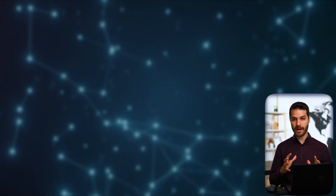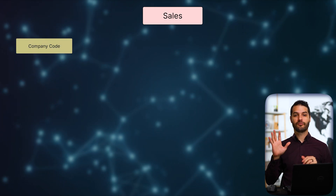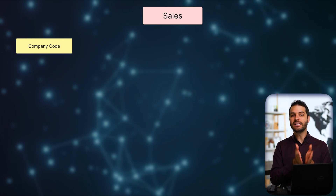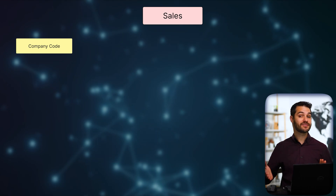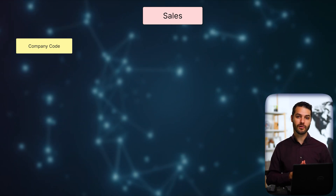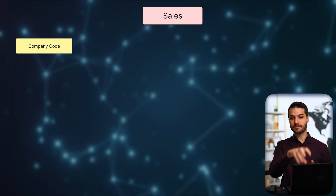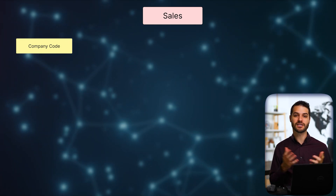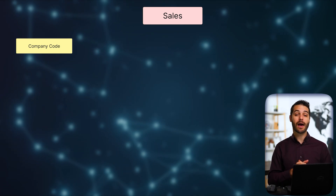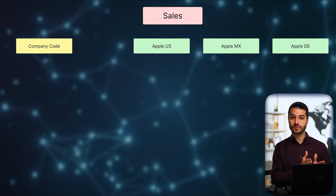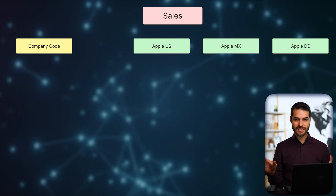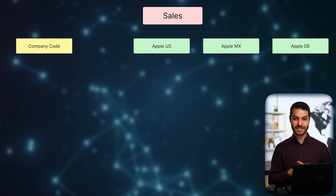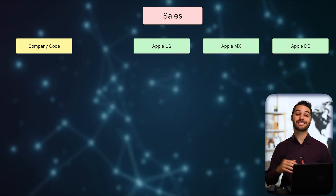We'll start with the sales area. From a sales standpoint, the organizational structure starts at company code — think of those as the individual entities or subsidiaries. Some companies might only exist in one country but still have multiple subsidiaries there. A common example is a separate subsidiary per country. For Apple, we'll say they have a US subsidiary, a Mexico subsidiary, and a German subsidiary — three company codes at the top level from a sales standpoint.